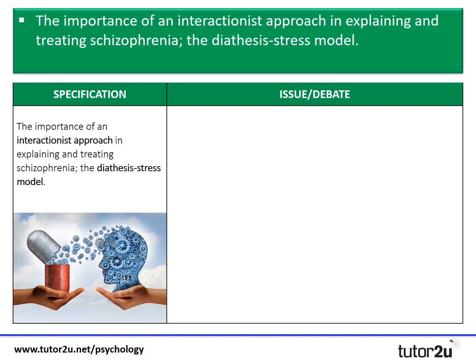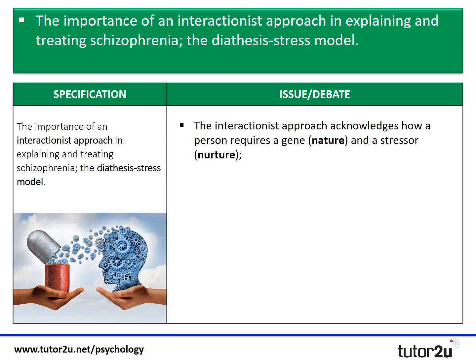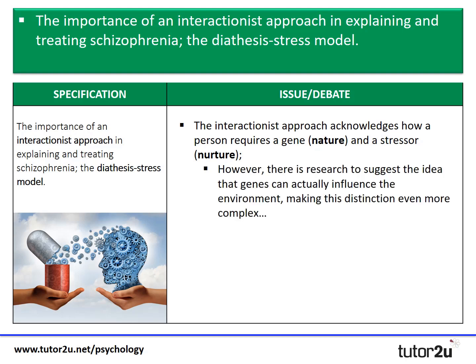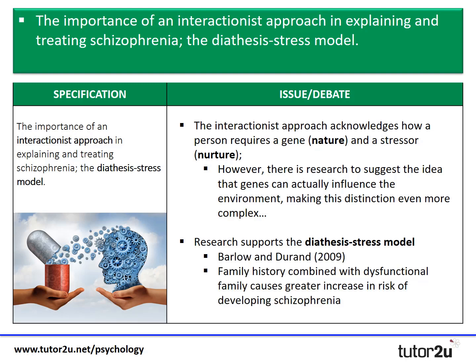Let's move on to the interactionist approach — a fascinating part of the course. The interactionist approach is unique in acknowledging that a person requires both a gene (nature) and a stressor in the environment (nurture). There is also research suggesting that genes can actually influence the environment, making this distinction even more complex. Most psychologists agree that nature and nurture both play a role, and we can take that one step further: there is research suggesting that the nature element — genes — can have a passive influence on the environment.